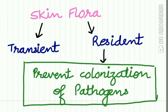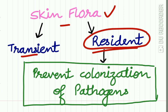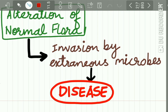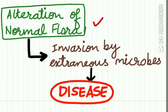The flora present on the skin — the microbes present on the skin — also prevent infection. There are two types of skin flora: the resident skin flora and the transient skin flora. The resident skin flora prevents colonization by pathogens. Alteration of this resident normal flora causes invasion of extraneous microbes into the skin, resulting in disease.